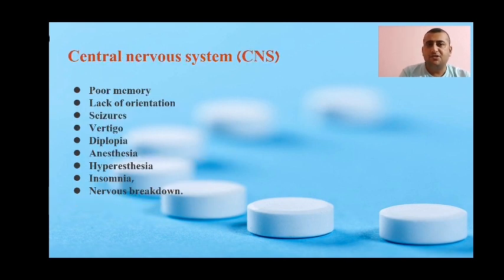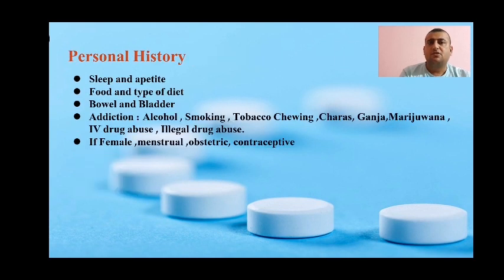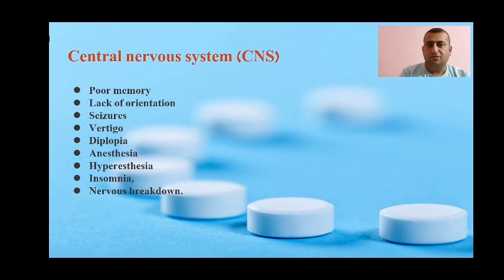In central nervous system review, ask about poor memory, lack of orientation, abnormal body movements, vertigo, diplopia, anesthesia, hyperesthesia, insomnia, and nervous breakdown. Once you have taken system review, symptoms attributable to a particular system should be included in chief complaint and elaborated in history of present illness as positive history. The remaining systems should be put as negative history to rule out disease attributable to other systems.